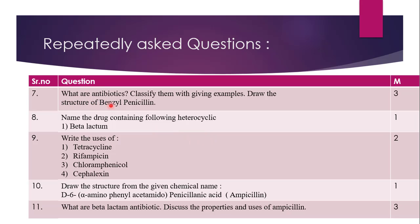The next question is: What are antibiotics? Here, along with the definition and examples, you are supposed to write down the common uses of antibiotics and the parameters. This will include the answer for what are antibiotics, and you are supposed to classify them with examples. Again the same question repeats: draw the structure of Benzylpenicillin. This question carries three marks, or four marks if the complete question includes what are antibiotics, classification, and structure.